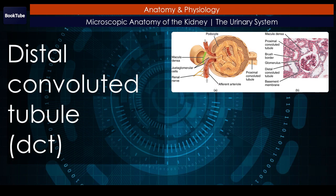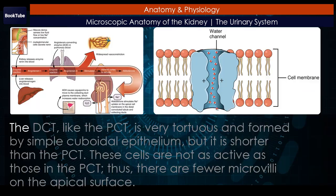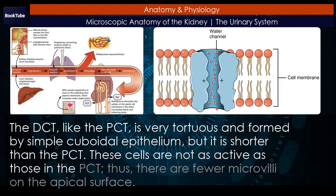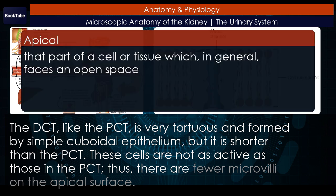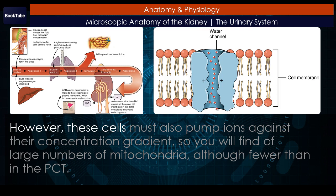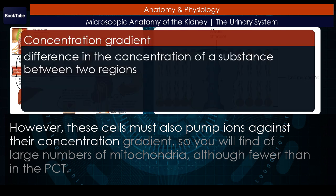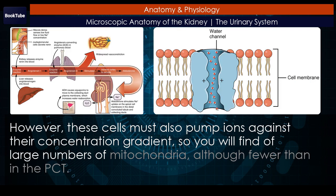Distal convoluted tubule (DCT). The DCT, like the PCT, is very tortuous and formed by simple cuboidal epithelium, but it is shorter than the PCT. These cells are not as active as those in the PCT, thus there are fewer microvilli on the apical surface. However, these cells must also pump ions against their concentration gradient, so you will find large numbers of mitochondria, although fewer than in the PCT.